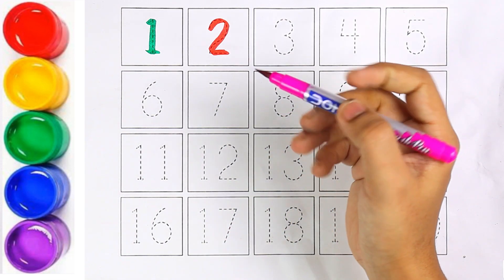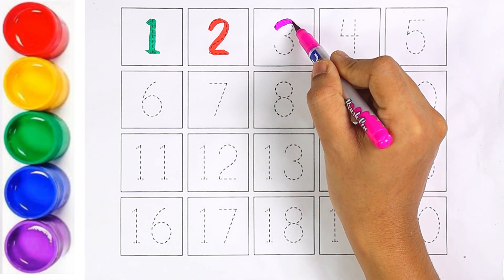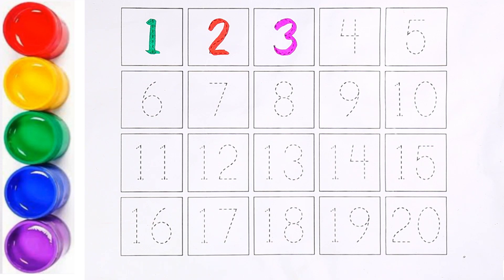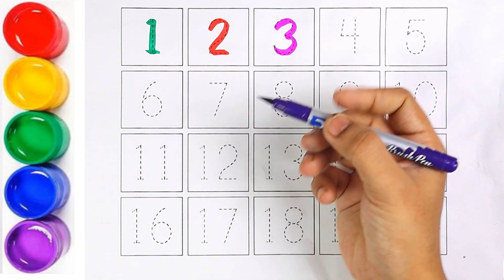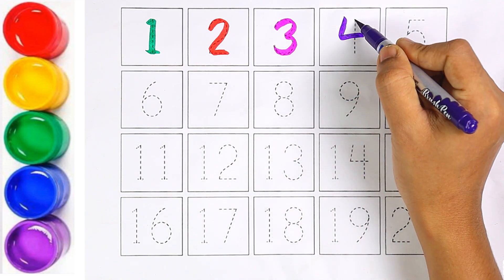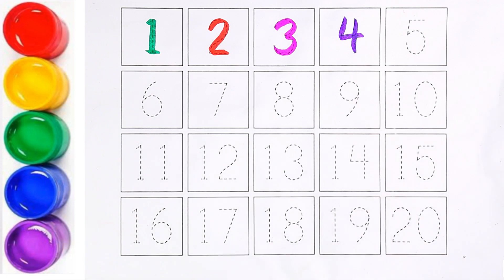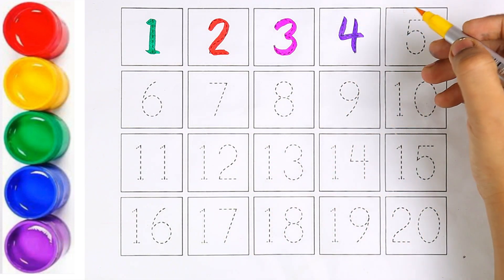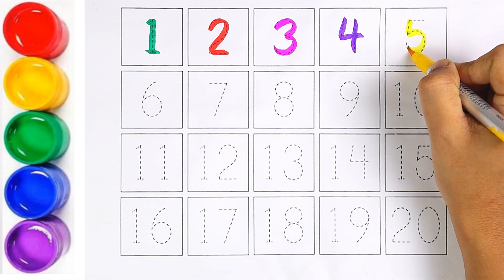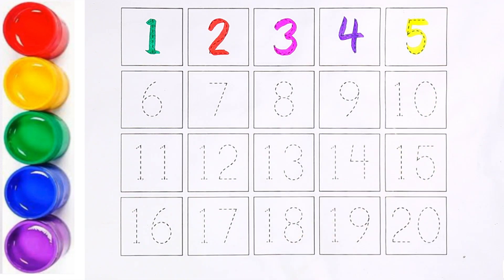Pink color. Number three. Which number is this, kids? Number three. And the next number is four. I am writing number four with purple color. Yellow color. Number five.